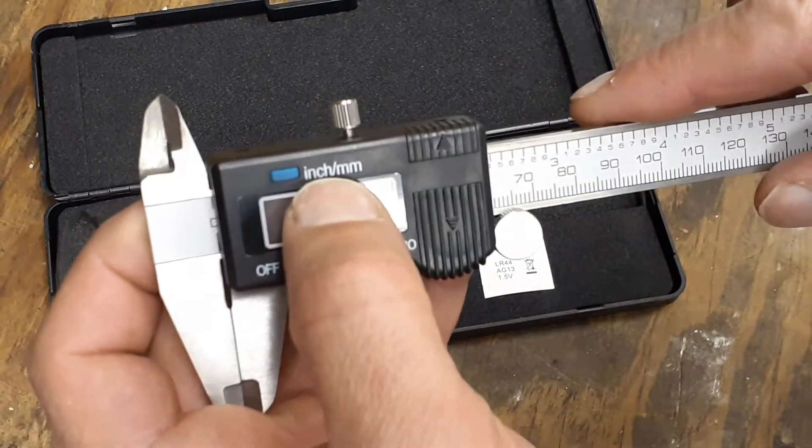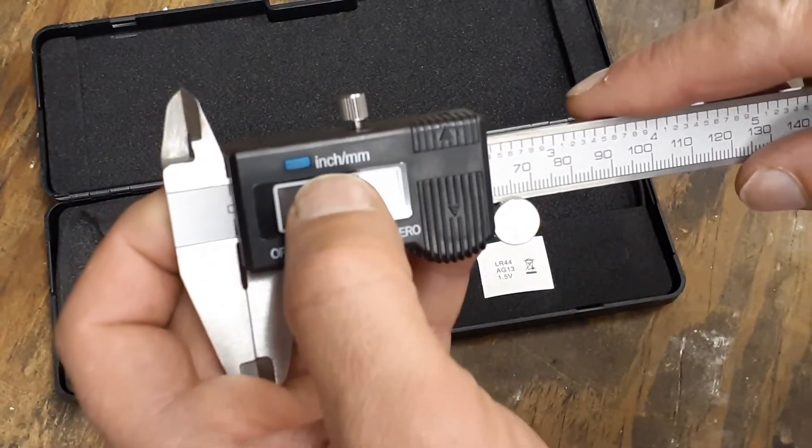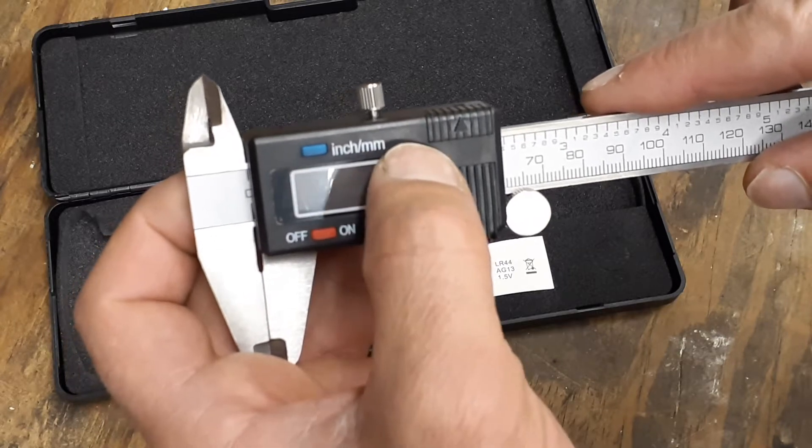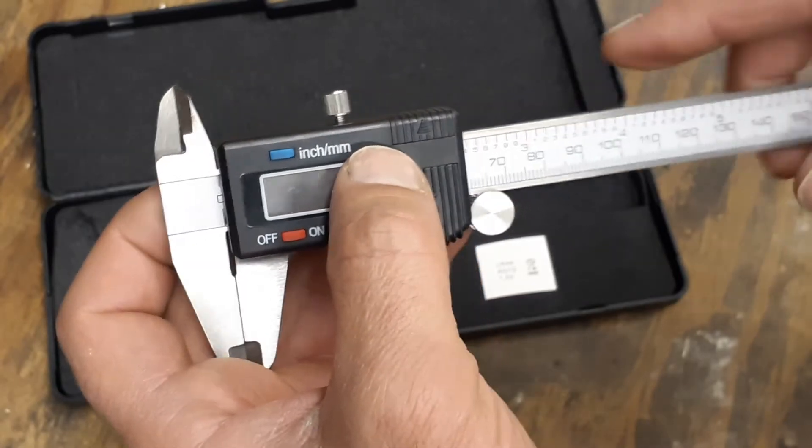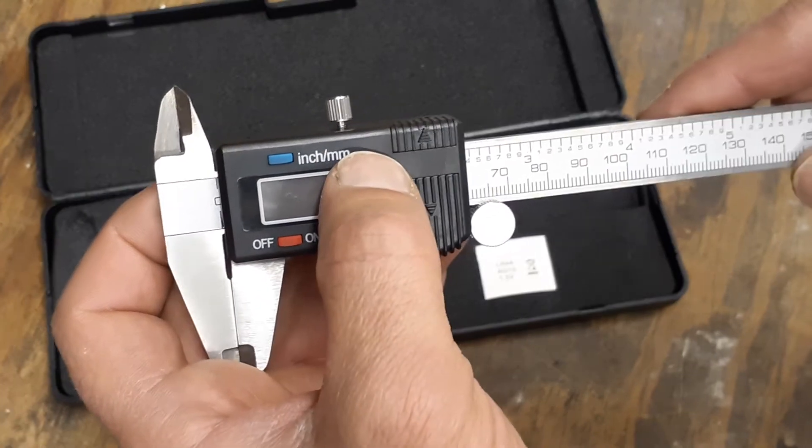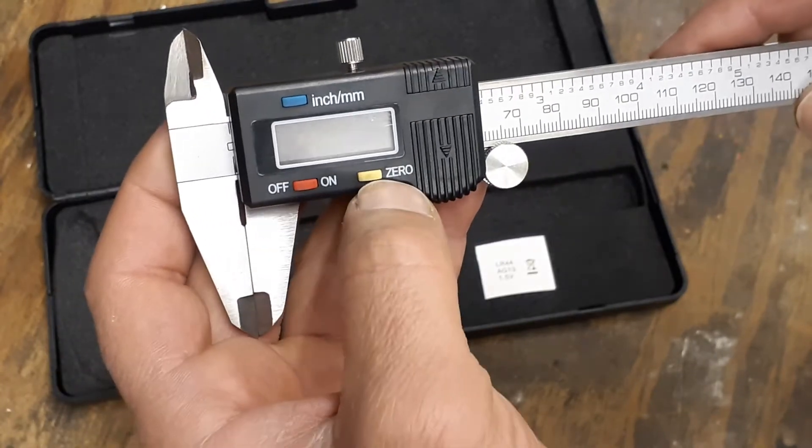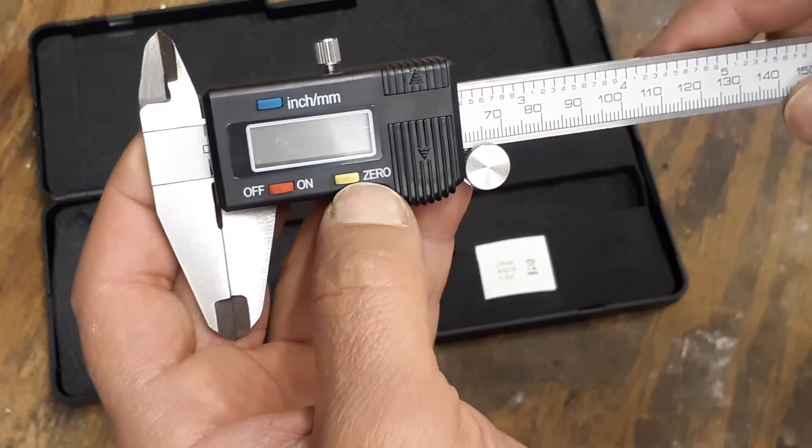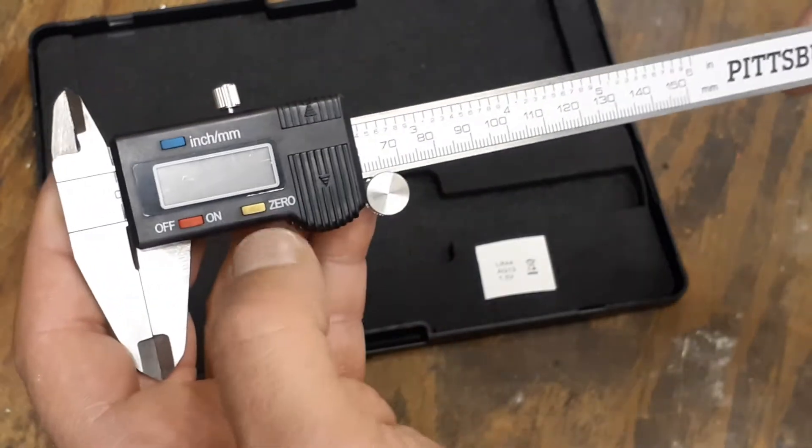But okay, these are basic. The ones I have at work - this one does inches and millimeters. The one I have at work does inches, millimeters, and it'll also do a fraction for you too, so you don't have to convert the inches into a fraction. And then you got your zero button where you can calibrate it for whatever you need to do.